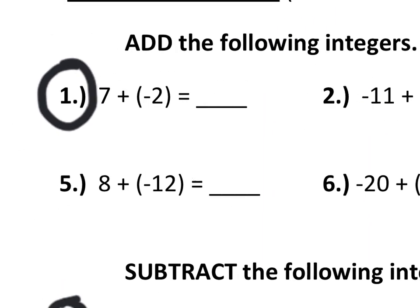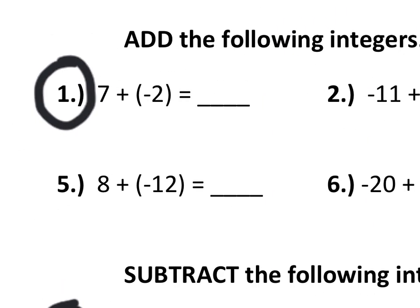So, for instance, 7 plus negative 2. Now, when we're adding a negative number, another way to say that is like subtracting the positive version. So we can rewrite this as 7 minus 2. And we know that 7 minus 2 is 5.